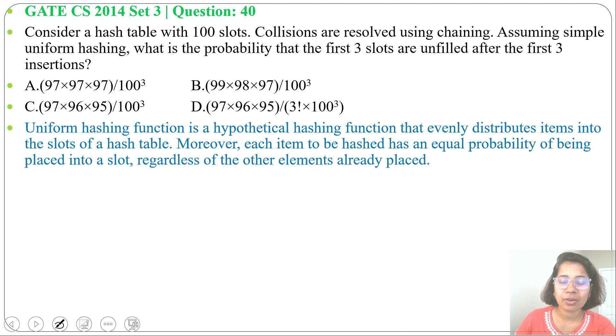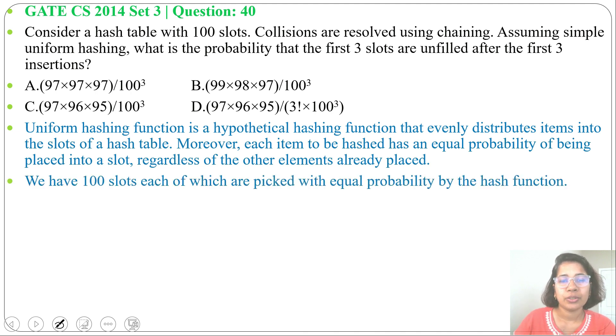We have 100 slots. Each slot can be picked with equal probability. To avoid first three slots, the first three elements will be inserted in the rest of the slots. Total 100 slots, we're avoiding first three, so 100 minus 3 equals 97.